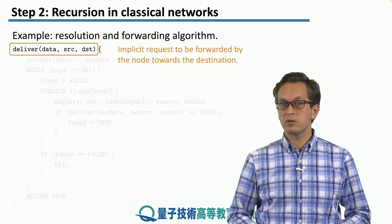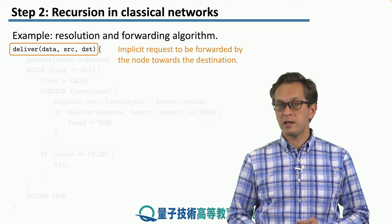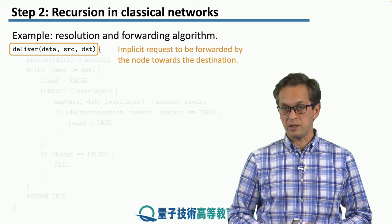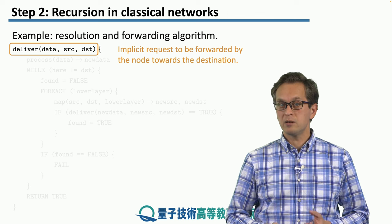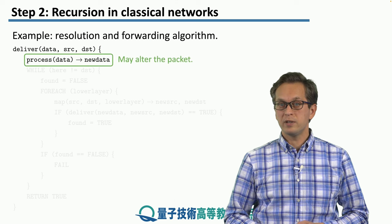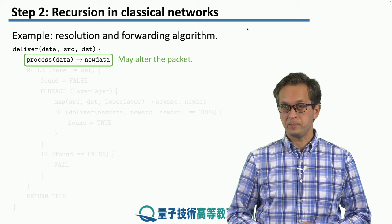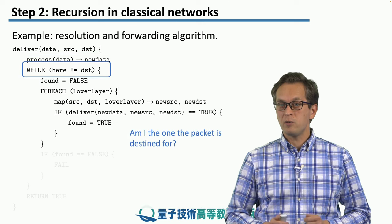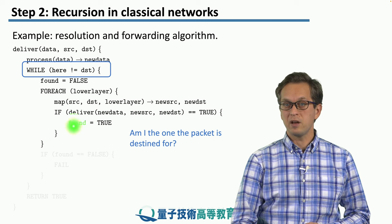Let's break it down into simpler pieces. In classical networking, if a node receives a packet, it is implicitly understood that the packet should be forwarded to its destination. The node needs to inspect and determine: am I the destination or not? The node may first do some processing on the received data, generating new data, and then asks the question — am I the one the packet is destined for? This happens inside the while loop.